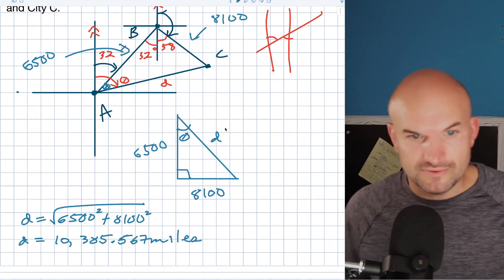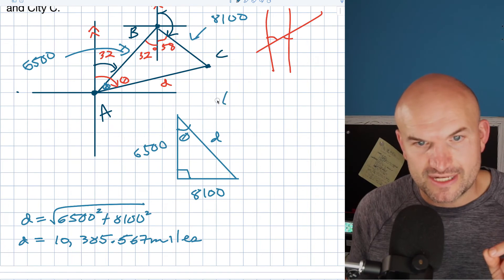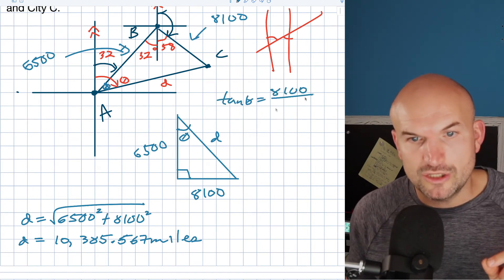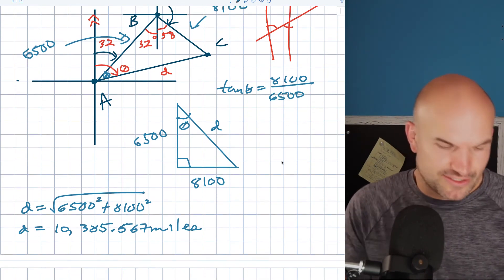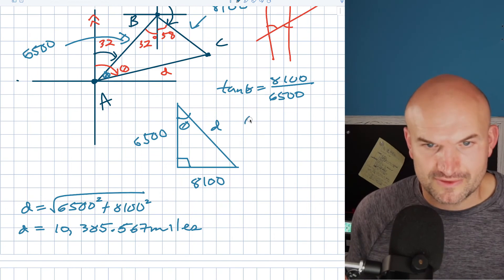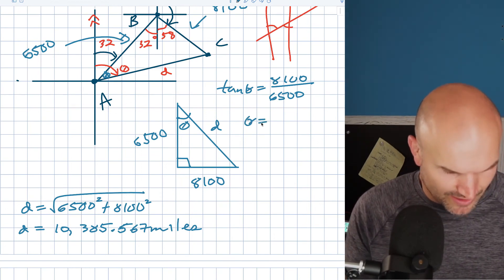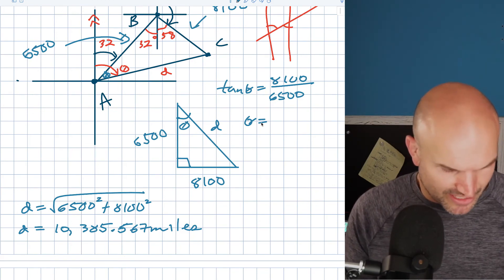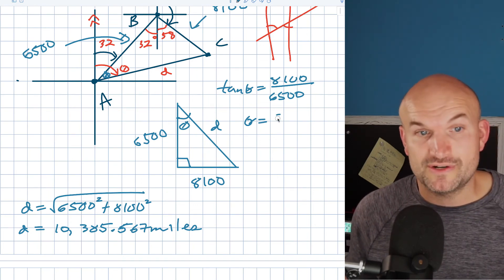Now to find this angle though, I need to look at this and say alright, what information do I have? So I need to say tangent of theta equals 8,100 over 6,500. So when I do that, I got to calculate this. So that's going to be tangent inverse of 8,100 divided by 6,500. Make sure you're in degree mode. And that is going to give me 51 degrees.